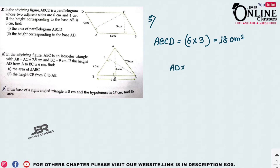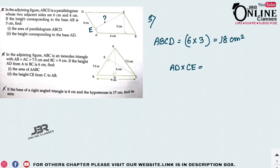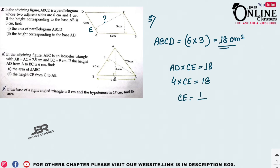Next, find the height corresponding to base AD. If AD is the base, then CE is the height. The area of the same parallelogram ABCD is still 18 cm². So AD × CE = 18, meaning 4 × CE = 18, giving CE = 18 ÷ 4 = 4.5 cm.